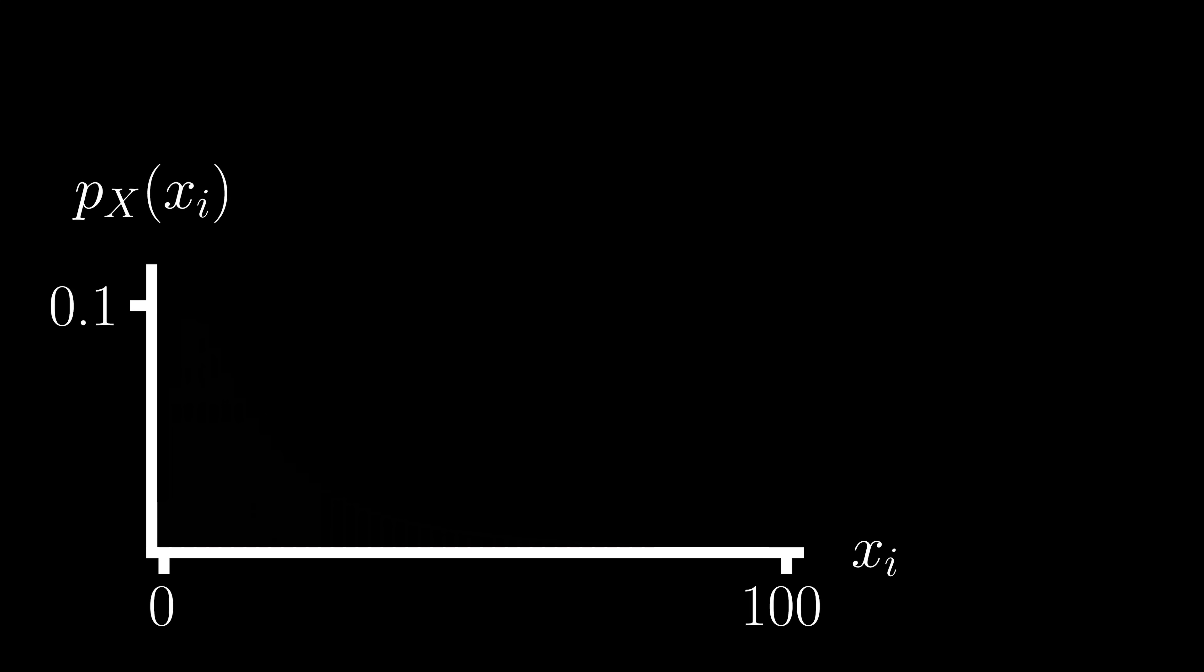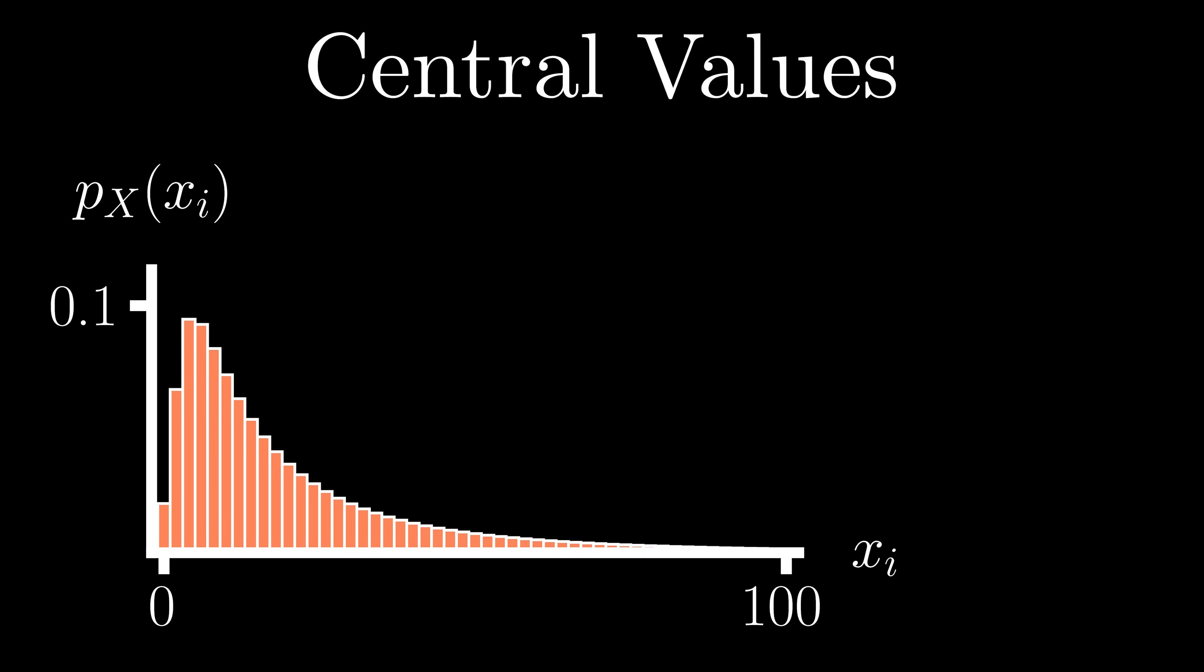Let's start off by first discussing the ways we describe the central tendency of a probability distribution. Per standard notation, we'll refer to each possible outcome our random variable X can take on as x sub i, with each outcome having an associated probability. We'll look at discrete random variables in this video, as they tend to be a bit more intuitive to understand. Now the first way we may think about describing the center of our distribution is based on its mode, which is simply the most probable value that X can take on, and I've highlighted that value here in blue.